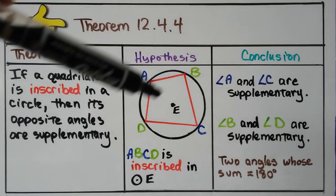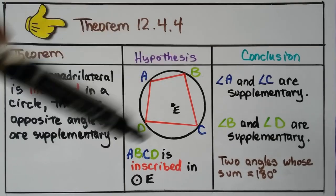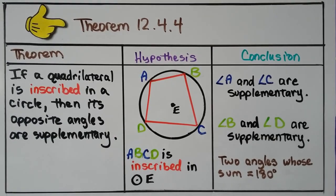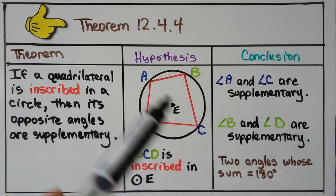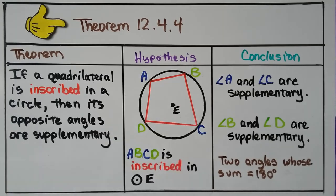and angle B and angle D are supplementary. So the two angles whose sum equals 180 degrees. So if we know the measure of this angle, we know that this angle and this angle must equal 180, so we can figure out what angle C is.